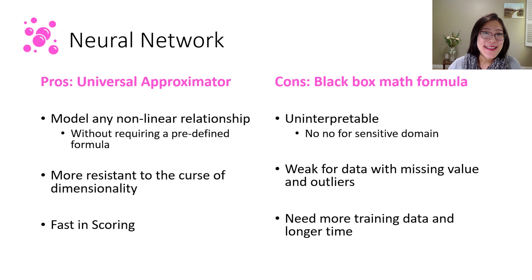The next commonly used one is neural network. This one has received so much attention nowadays. The pros is that it's a universal approximator. What it means is that given enough neurons, enough time, it can model any nonlinear relationship.